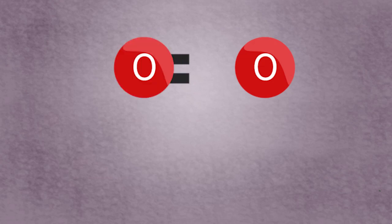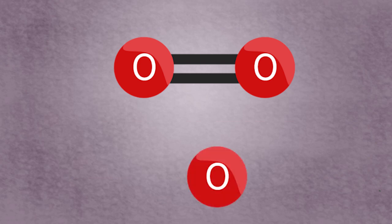An ozone molecule is drawn so that two oxygen atoms are held together by a double covalent bond and the remaining linked by a single covalent bond.